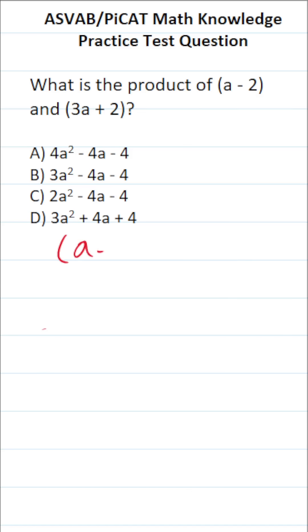So we're going to be multiplying a minus 2 and 3a plus 2 together. You could use the FOIL method, but all you have to do is this.